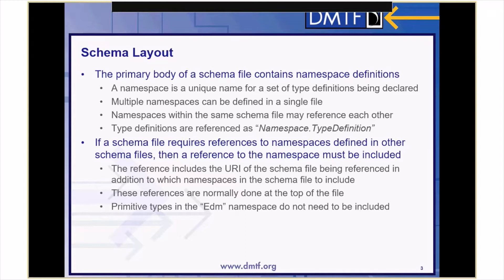If a schema file requires references to namespaces defined in other schema files, then a reference to the namespace must be included. The reference includes the URI of the schema file being referenced in addition to which namespaces in the schema file to include. These references are normally done at the top of the file. Primitive types in the EDM namespace do not need to be included — these are common data types such as strings, integers, and booleans.